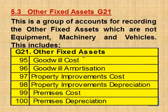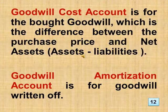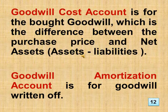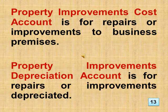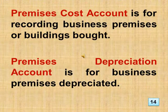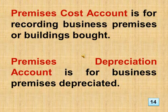Section 5.3 Other Fixed Assets, Group 21. This is a group of accounts for recording the other fixed assets which are not equipment, machinery and vehicles. This includes: Goodwill Cost, Goodwill Amortization, Property Improvements Cost, Property Improvements Depreciation, Premises Cost, and Premises Depreciation. Premises Cost Account is for recording business premises or buildings bought. Premises Depreciation Account is for business premises depreciated.